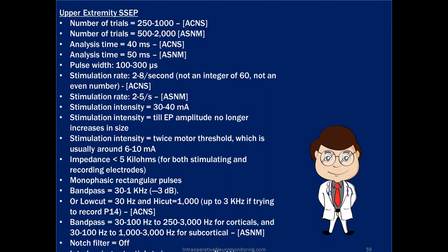Pulse width is 100 to 300 microseconds. Stim rate is 2 to 8 stimulations per second, and it cannot be an integer of 60 and not an even number. This relates to the 60-cycle hertz noise common in American operating rooms — in the UK it's 50 Hz. If our stim rate is an integer of 60, we're more prone to artifact from that frequency.